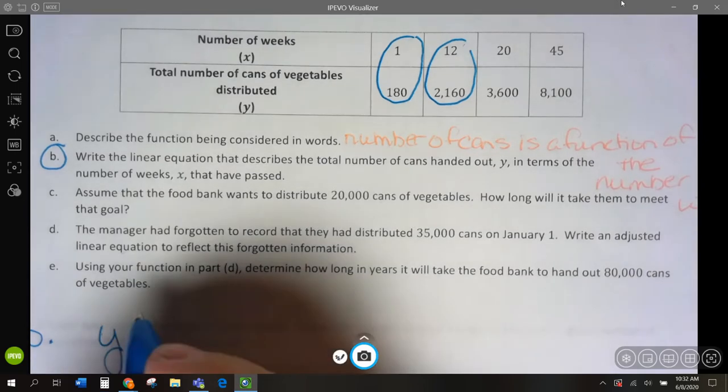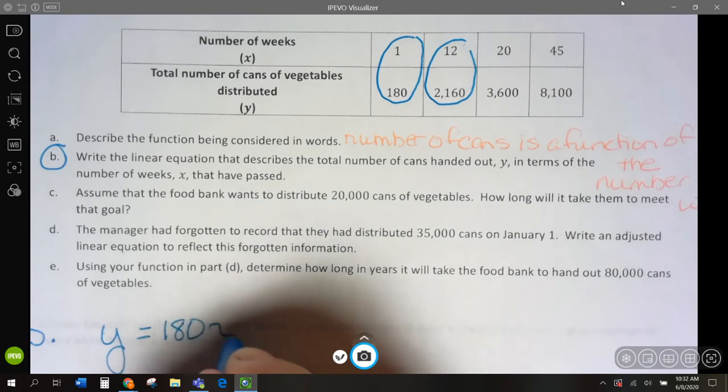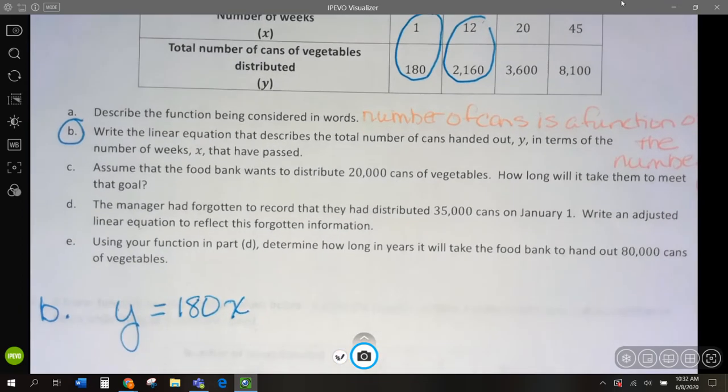So y is going to equal 180 cans for every week. y equals 180x.